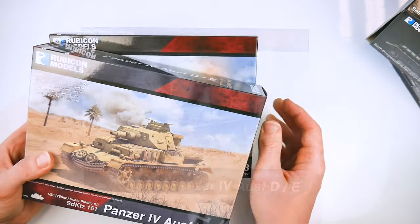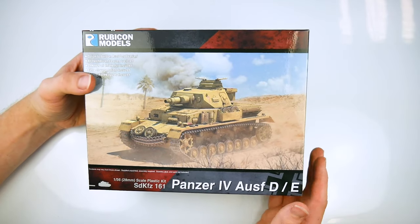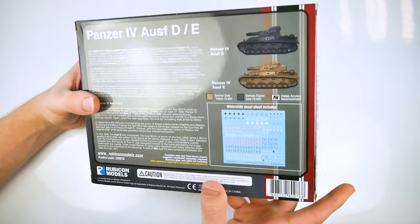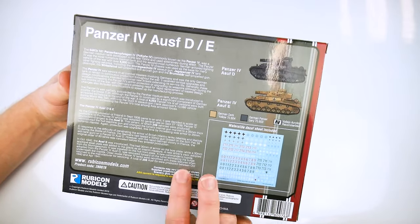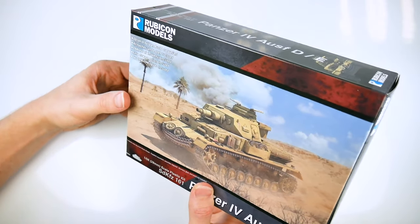The Panzer IV is one of the most iconic and widely produced tanks in the German arsenal. Serving in every major theatre where the German forces fought, the basic chassis was used to create a myriad of differently armed vehicles for use during World War II.